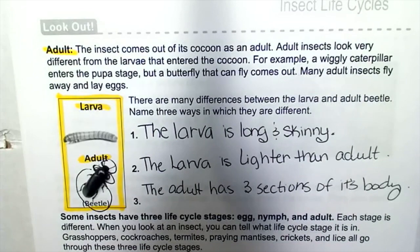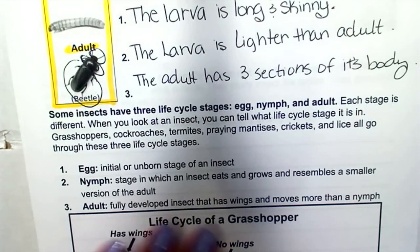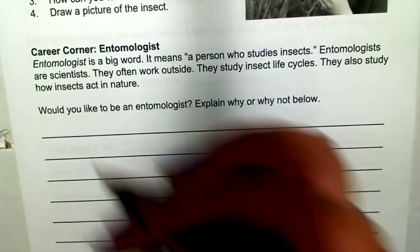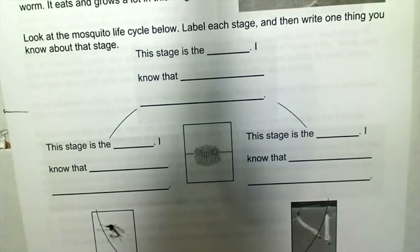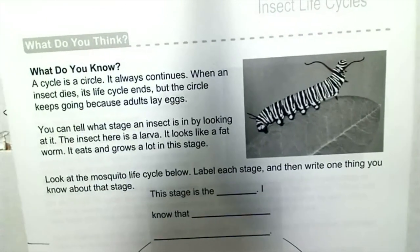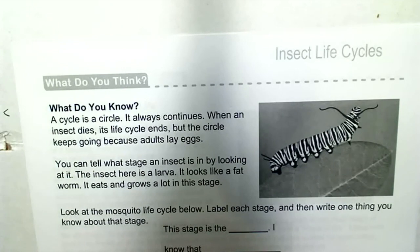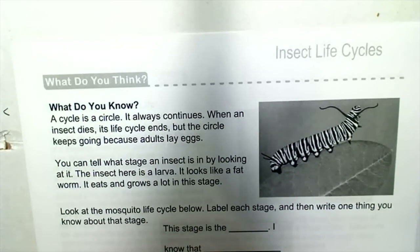Those are all the questions you have to answer on page three. Go ahead and finish reading the rest of it. When you get to page four, just answer that question. Page five says: what do you know? A cycle is a circle — it always continues. When an insect dies its life cycle ends, but the circle keeps going because adults lay eggs. You can tell what stage an insect is in by looking at it. The insect here is a larva — it looks like a fat worm and eats and grows a lot in this stage. Look at the mosquito life cycle below.